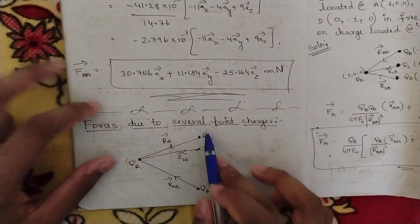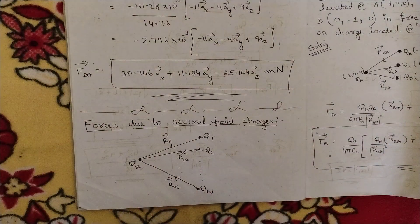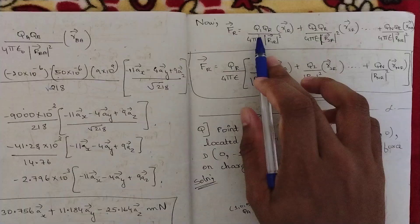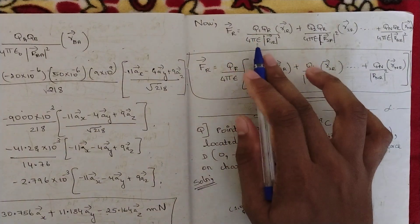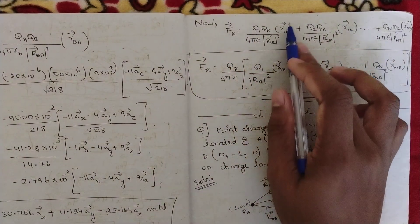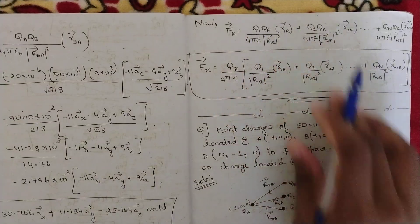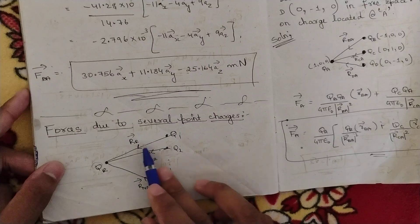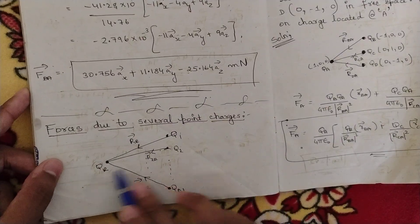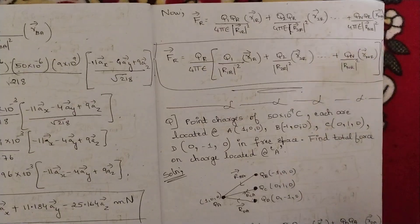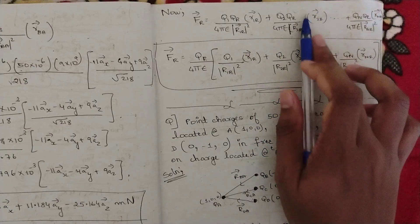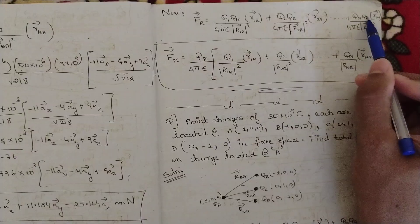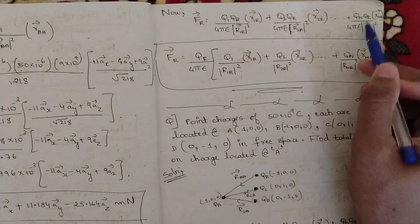Now let us write the equation. First consider the two charges qr and q1. The Coulomb's force between them is: product of charges times 1 over 4π epsilon, divided by the magnitude of r1r squared, times the unit vector r1r. Similarly we do this for all charges. Add all of them — for qr and q2 we write the product of charges divided by 4π epsilon times the square of the magnitude, times unit vector r2r.